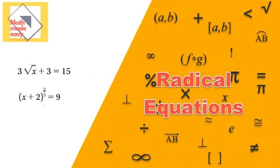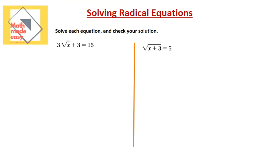Let's look at the first example. These are basic radical equations — we have 3 radical x plus 3 is equal to 15. The first thing you should be thinking about is how to isolate the radical. Even when we isolate the radical, what are we going to do with it? We have to undo it by squaring.